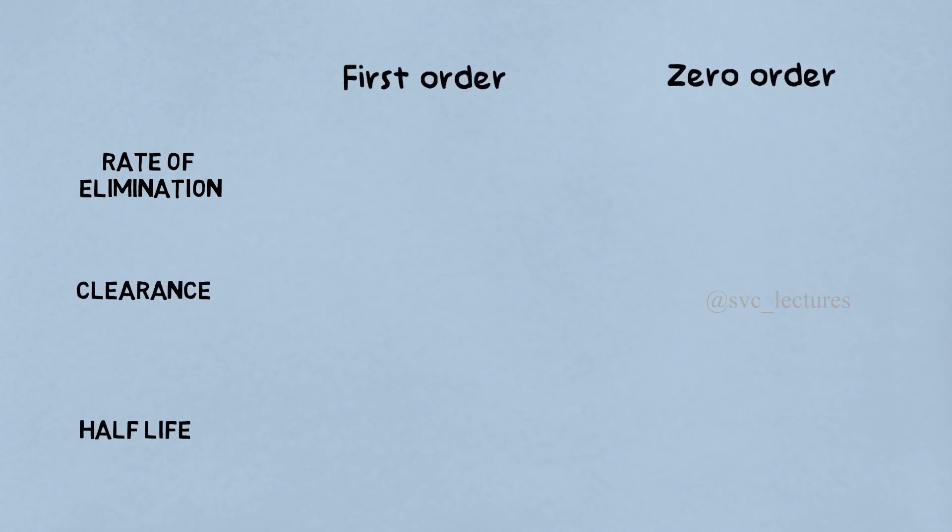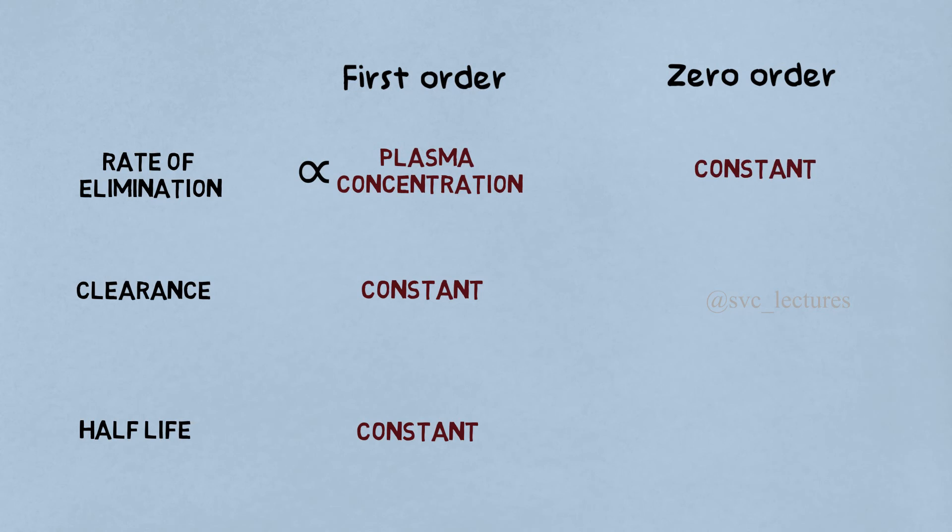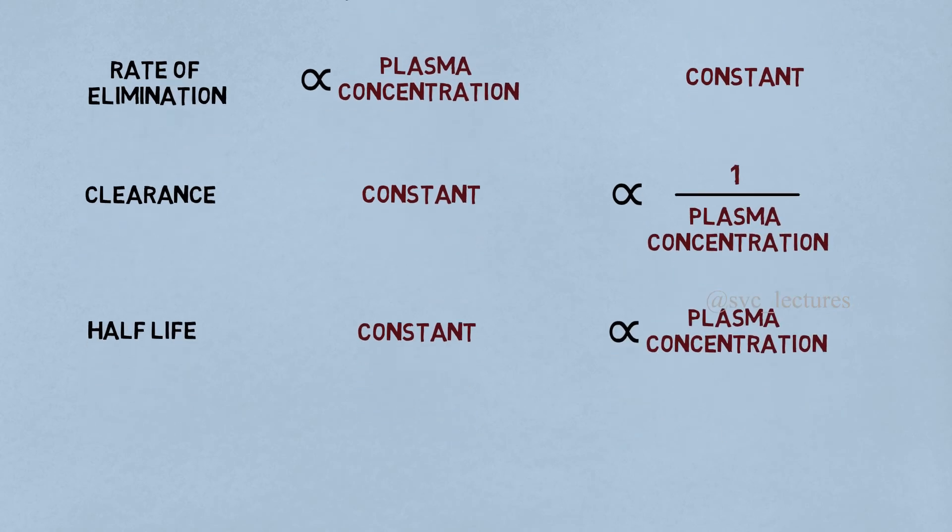Let's compare the rate of elimination, clearance, and half-life for first-order and zero-order kinetics. For first-order kinetics, the rate of elimination is directly proportional to plasma concentration, and the clearance and half-life are constant. For zero-order kinetics, the rate of elimination is constant, clearance is inversely proportional to plasma concentration, and the half-life is directly proportional to plasma concentration.